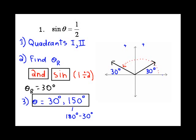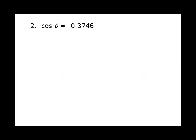Let's try a few more examples. Here we get cosine theta is equal to negative 0.3746. So it's a decimal, but that's okay. But it's also negative. And this is going to remind us to do something also very important. Same method.